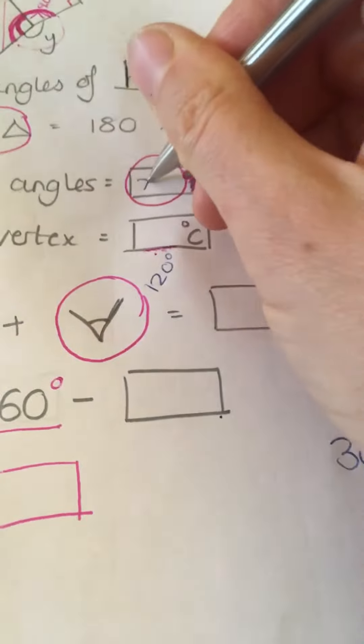So, 720 degrees. Now I need to work out what each of the angles are, so I divide them by 6.